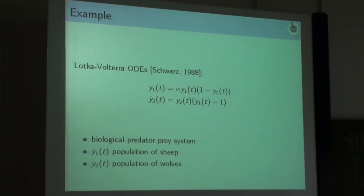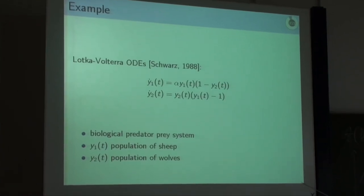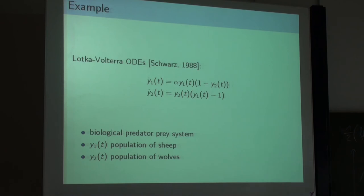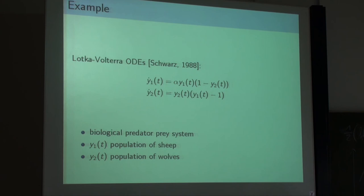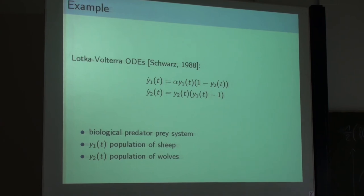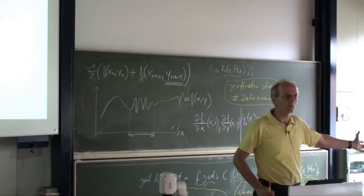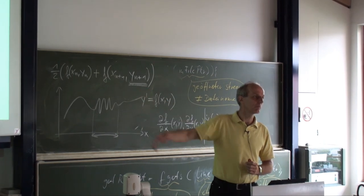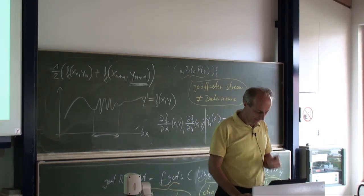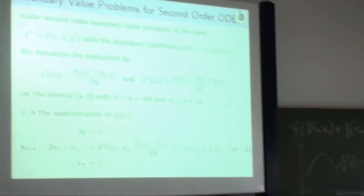We looked a little at the modeling of the wolf-sheep population: adding extra parameters, adding other populations such as grass. You can locally test whether the model is good by observing a real sheep-and-wolf population and checking whether the model predictions hold.